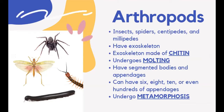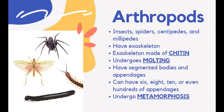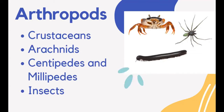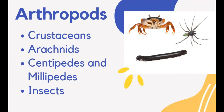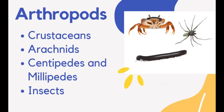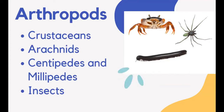Just like mollusks, arthropods have a mouth and an anus, and an open circulatory system with heart and arteries. Most crustaceans have three body segments: the head, thorax, and abdomen. Lobster, crayfish, barnacle, crab, and shrimps are crustaceans. They have two pairs of sensory antennae and mandibles, also called jaws, for chewing food. Most have a covering at the back made of chitin called the carapace.